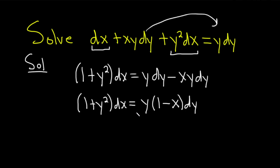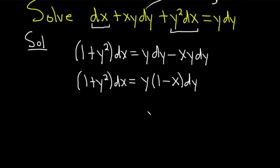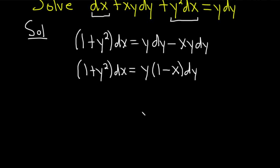And the goal is to get all the y's on one side together with the dy, and all the x's on one side together with the dx. So I guess what we can do then is simply divide both sides by 1 plus y squared and divide both sides by 1 minus x.